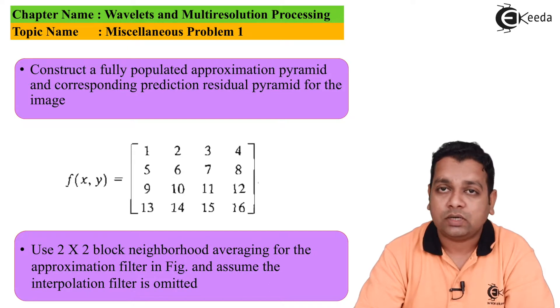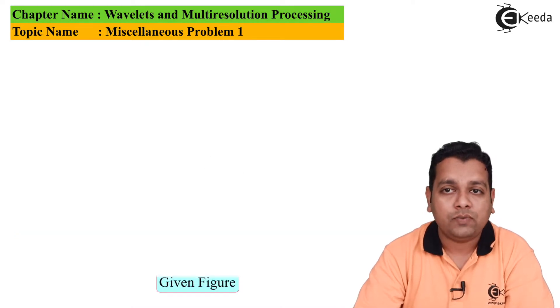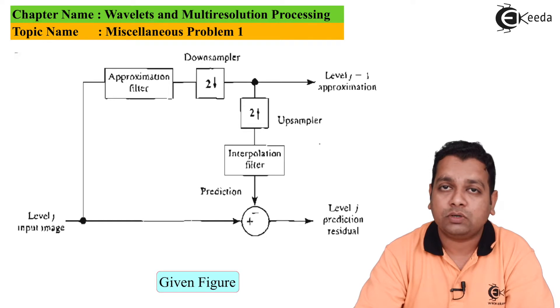Next the statement continues: use the 2 by 2 block neighborhood averaging for the approximation filter and assume the interpolation filter is omitted. For having the pyramids generated, the procedure is shown with the help of the figure that we have studied while having the image pyramids.